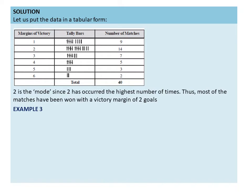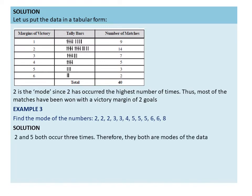Let us move to the next example. Find the mode of the given numbers. Here, two occurs three times and five also occurs three times. Since both two and five occur three times, they are both modes of this data.